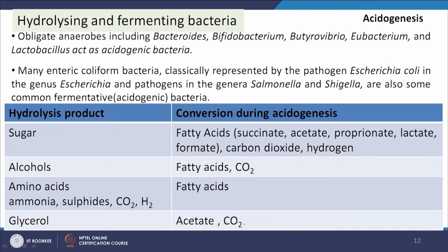Acidogenic bacteria are responsible for acidogenesis: simple organic compounds such as sugars, fats, and lipids are converted to short-chain fatty acids. Obligate anaerobes including Bacteroides, Bifidobacterium, Butyrivibrio, Eubacterium, and Lactobacillus act as acidogenic bacteria. Enteric coliform bacteria like Escherichia coli and pathogens in genera Salmonella and Shigella are also common fermentative or acidogenic bacteria. Products include succinate, acetate, propionate, lactate, formate, CO2, and hydrogen from sugars; fatty acids and CO2 from alcohols; fatty acids, ammonia, sulphide, and CO2 from amino acids; and acetate and CO2 from glycerol.